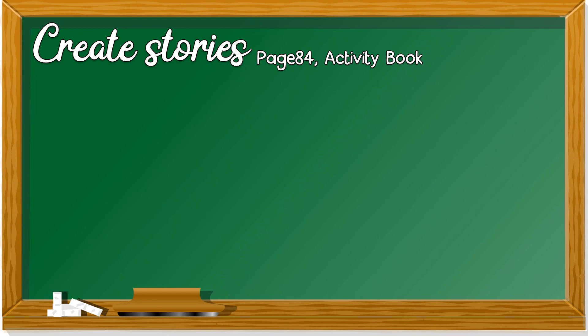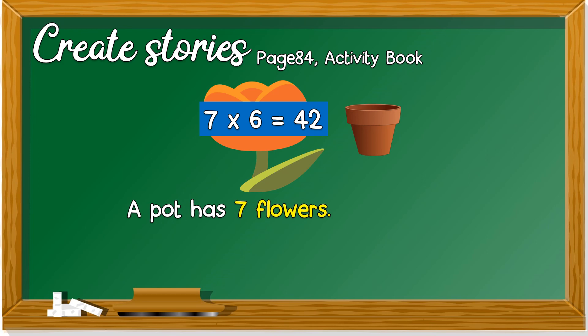We look at the second question. You're given a number sentence and a flower. You need to create a story using this number sentence and flowers. You can write it like this: Maybe you can say about pot or vase. A pot has seven flowers. There are six pots. There are 42 flowers all together. 7 × 6 = 42.